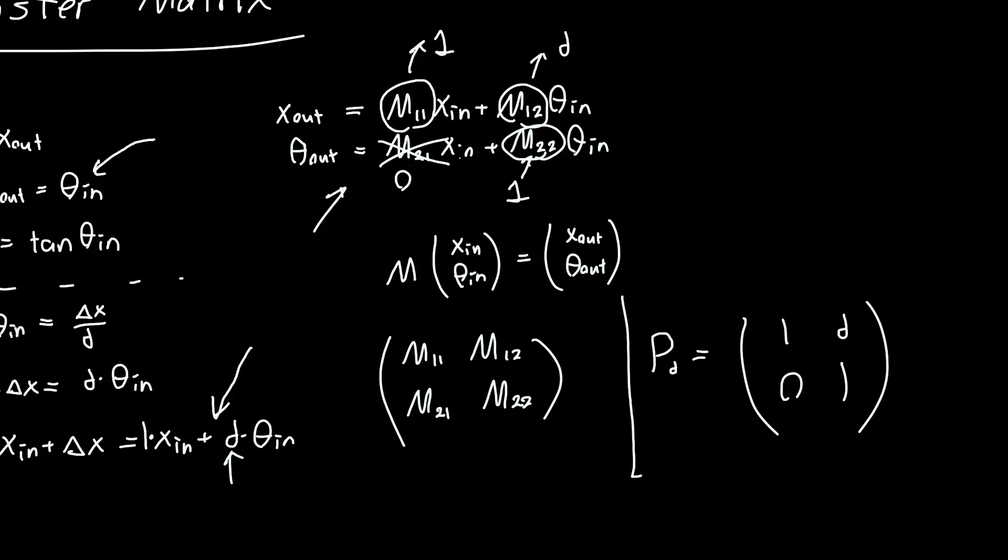Great. So this is our matrix which describes any incoming ray. So any ray of a coordinate x in, theta in. If you apply the propagation matrix to it, that will give you the ray after it's propagated some distance d.